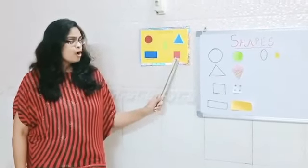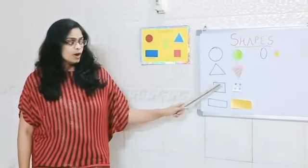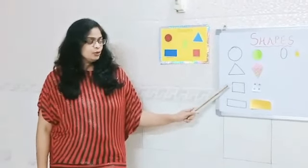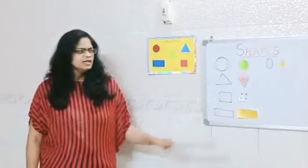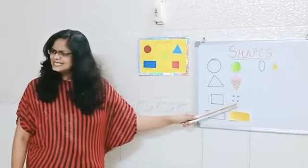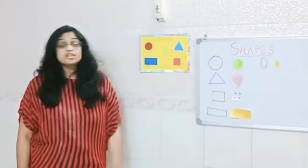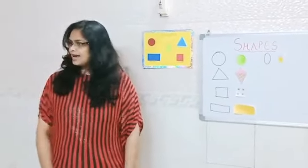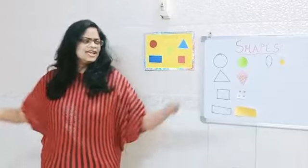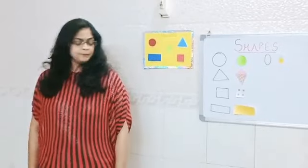Three, four. One, two, three, four. That's a dice. It also has four sides. So let's sing it.